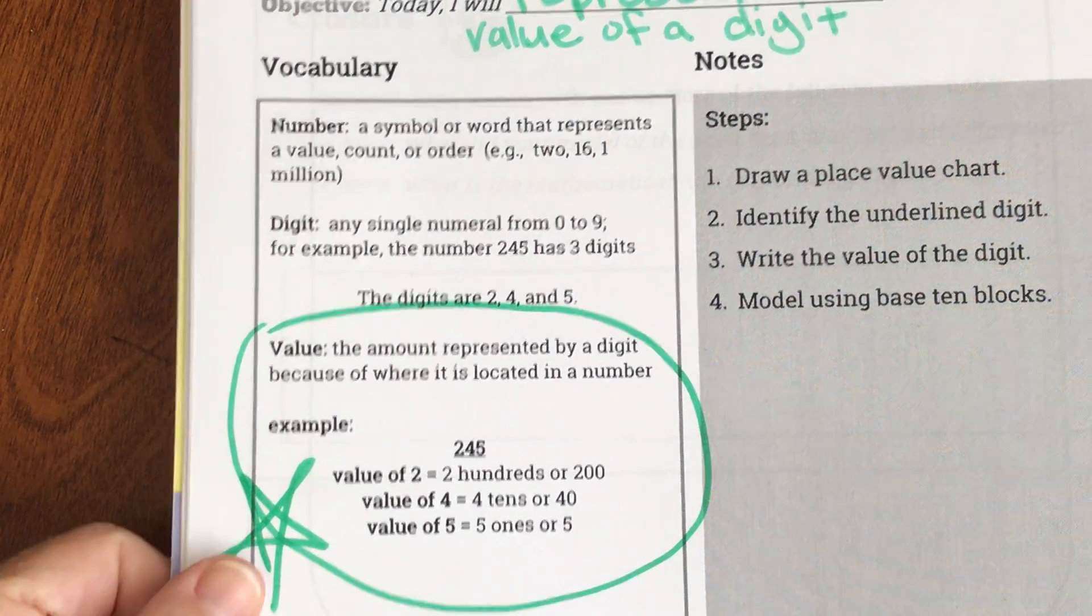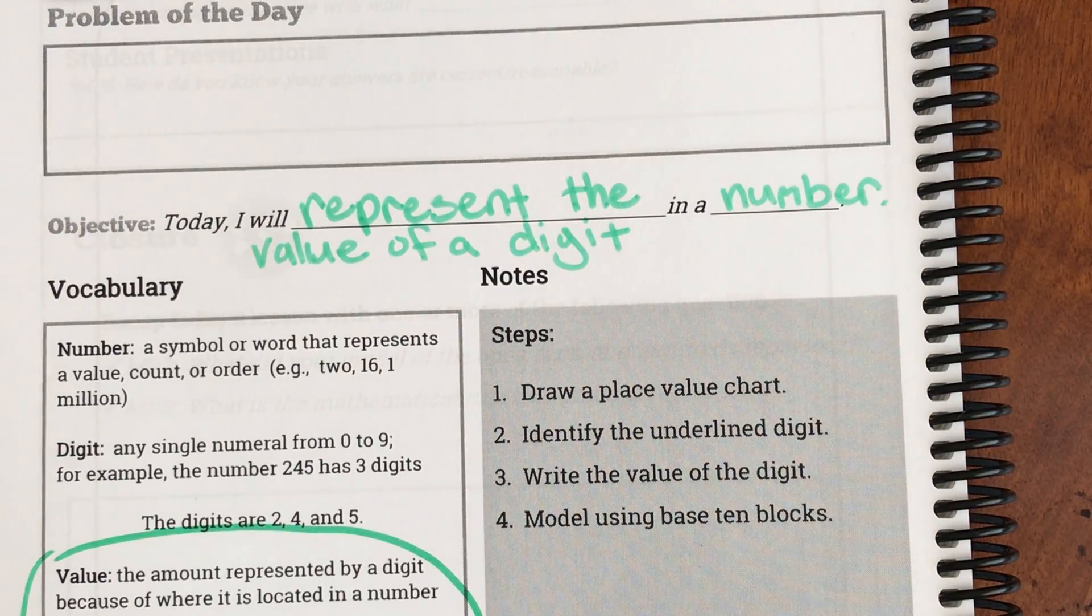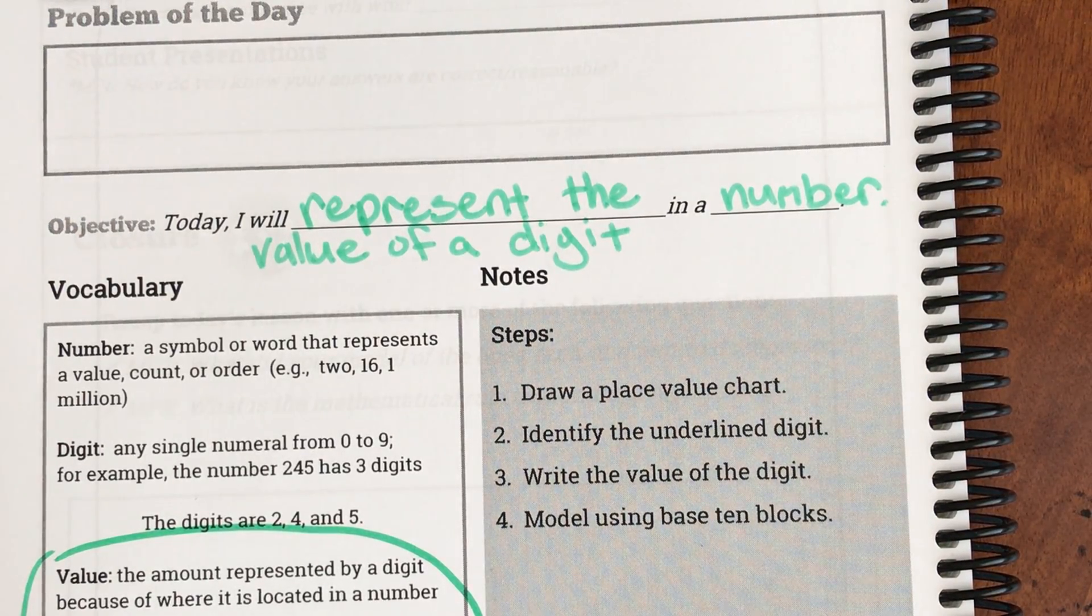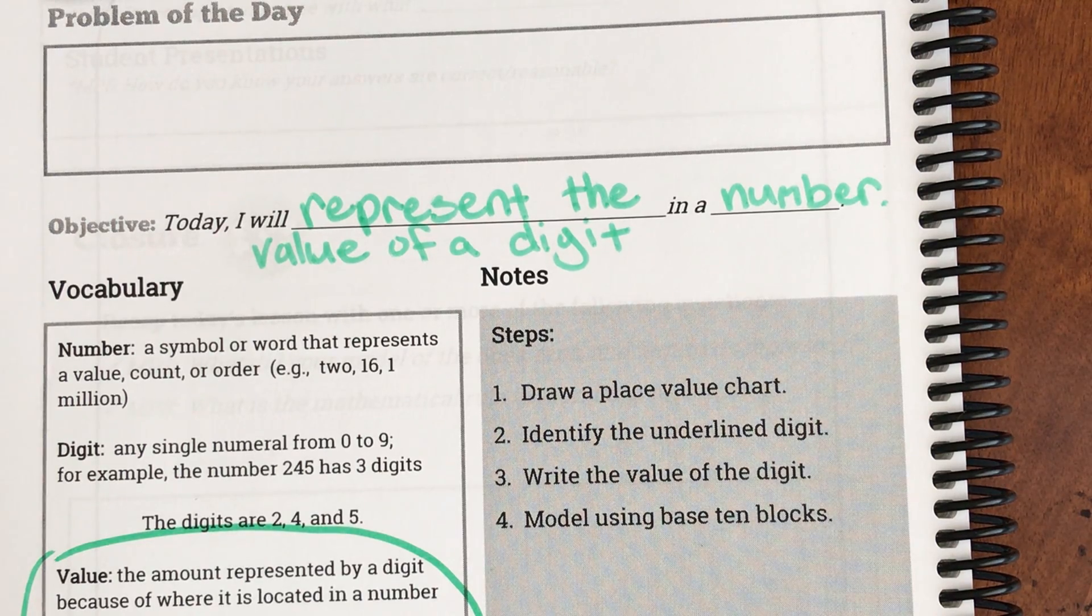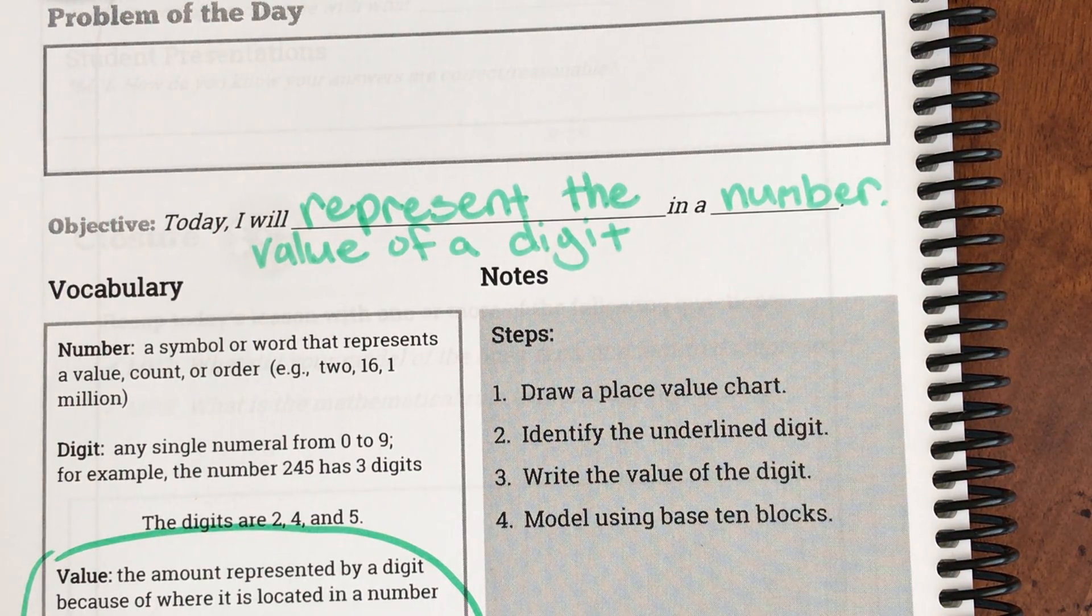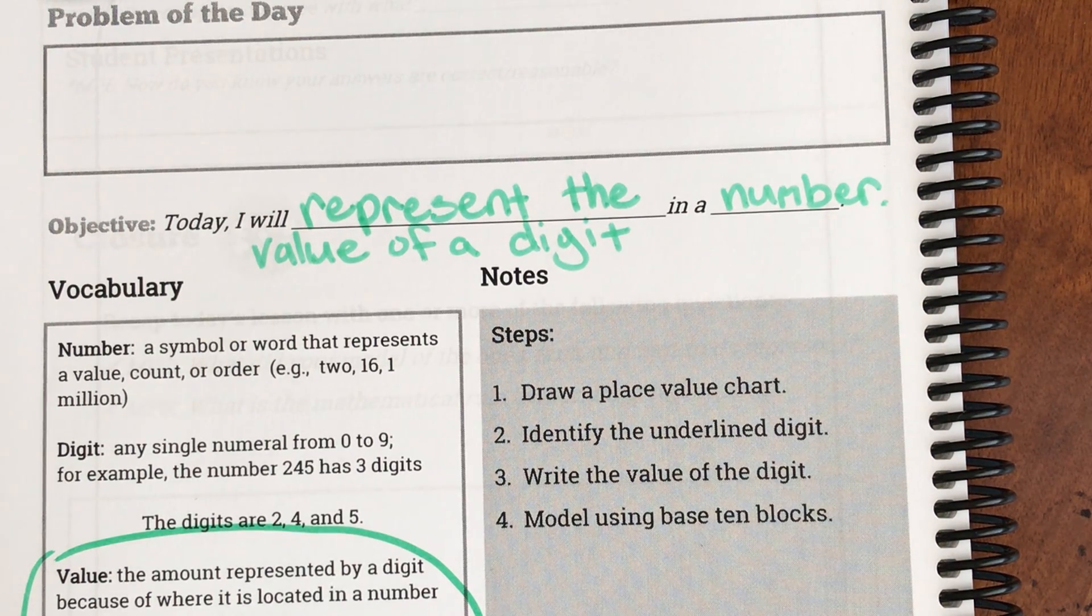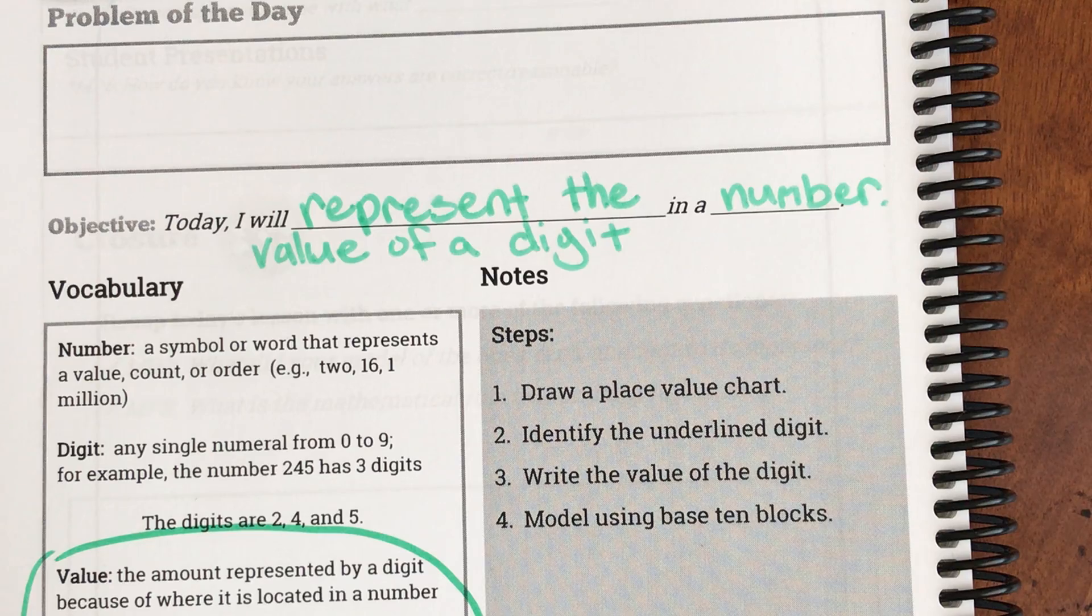So let's look at our steps. They're really good steps today. It says number one, draw a place value chart; identify the underlined digit; and write the value of the digit; model using base 10 blocks. Okay, so some things that we're going to do before.